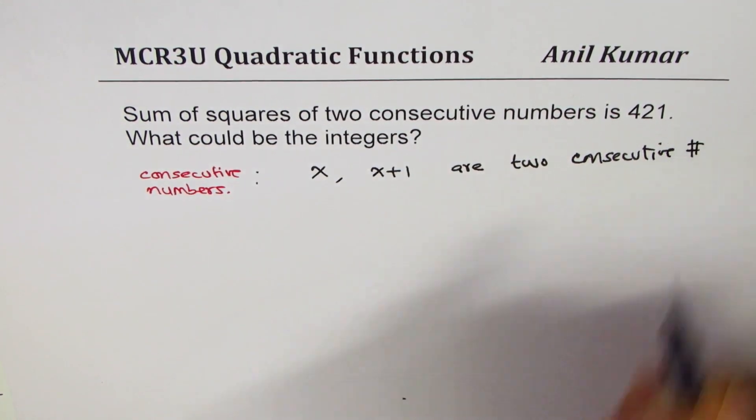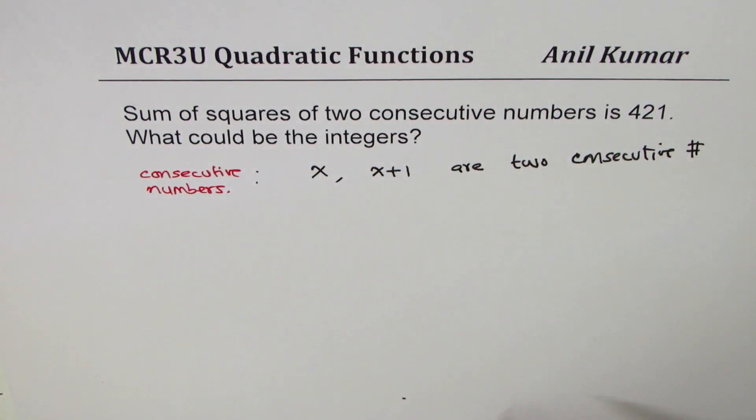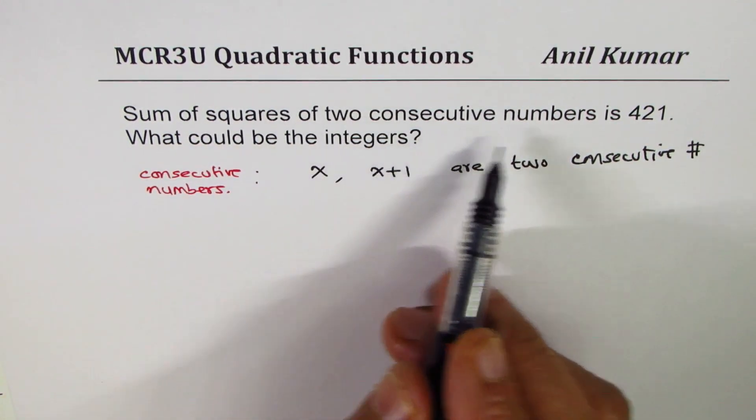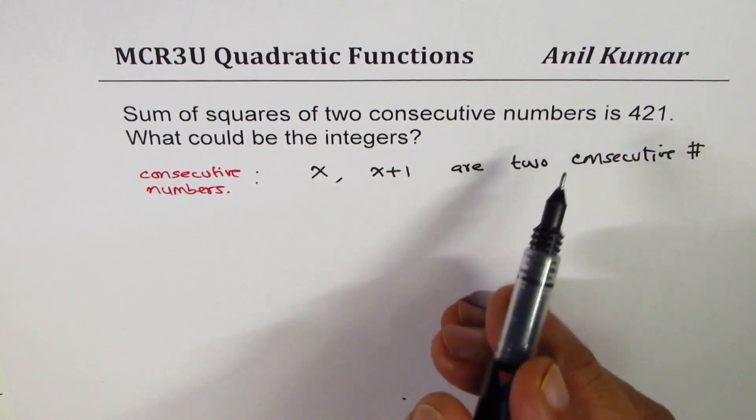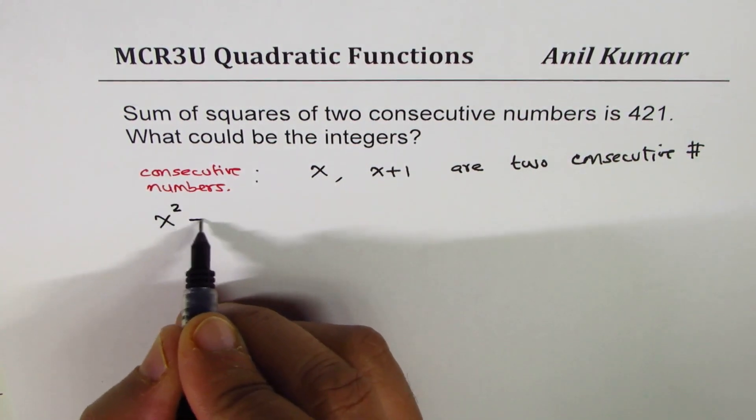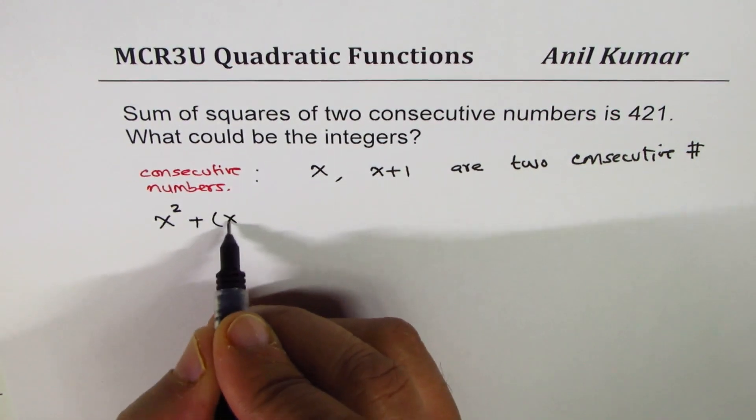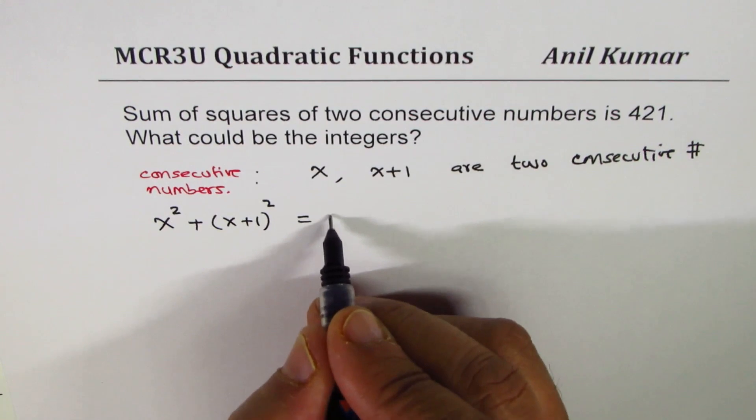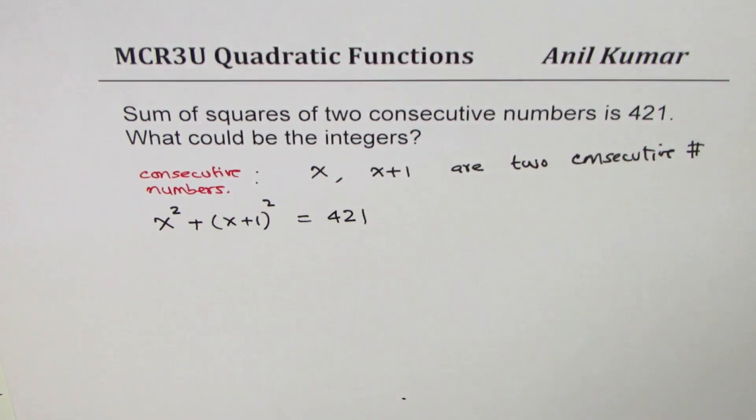Let me write the symbol for numbers. Now it says sum of squares of two consecutive numbers is 421, so we can write down the equation as: square of x which is x² plus square of the other number which is (x+1)² and their sum is 421.